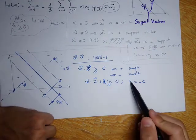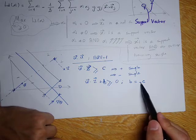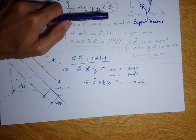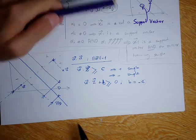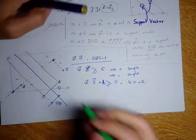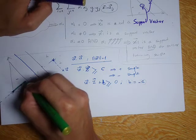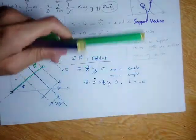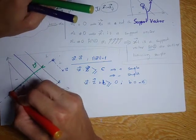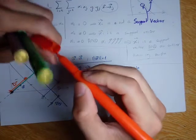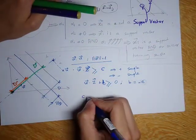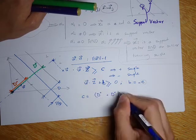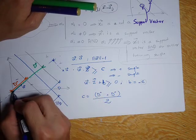So b equals minus c. To find b I just need to find c. To find c I need to compute this distance D plus and then compute D minus, and then c equals D plus plus D minus divided by 2, giving a measure of distance from the center to the decision boundary.